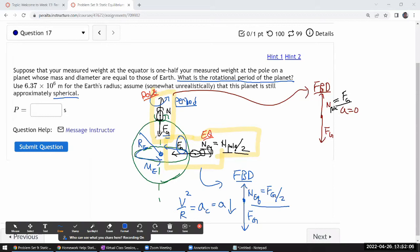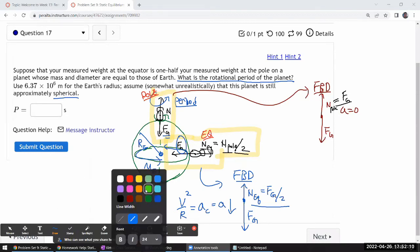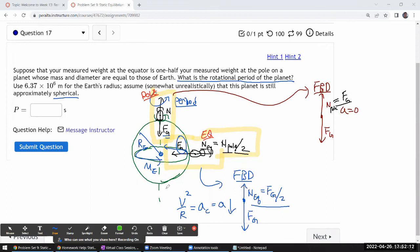Centripetal acceleration will be given by v squared, the rotational speed of the person, divided by r, the radius at which the person is spinning, the equatorial radius. This is the key realization you need to make progress in this question, that this difference in the force is going to be tied to the downward acceleration, and you can tie it to the centripetal acceleration.